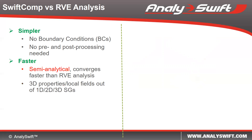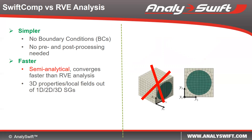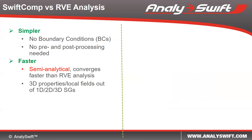SWIFT-CON can compute the 3D properties and local fields out of 1D, 2D, or 3D structure genomes. For example, to compute 3D properties of fiber-reinforced composites, RVE needs a 3D block. But if you use SWIFT-CON, only a two-dimensional domain will be necessary.